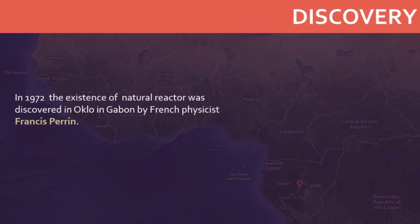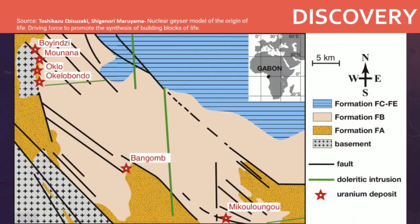It was in 1972 that the existence of such a phenomenon was discovered in Oklo, in Gabon, by French physicist Francis Perrin. The conditions found were very similar to what was predicted by Paul. Oklo is the only known location for this in the world, and it consists of 16 sites at which self-sustaining nuclear fission reactions are thought to have taken place approximately 1.7 billion years ago.